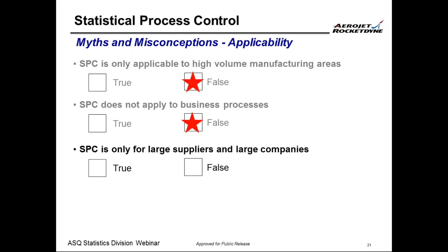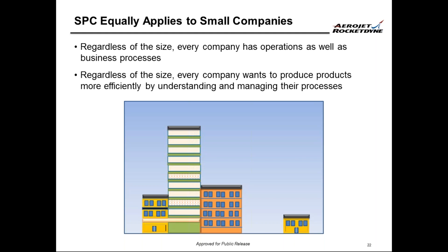SPC is only for large suppliers and large companies — this is also not true. When visiting suppliers, they would say they are a very small supplier and cannot apply SPC. But SPC applies regardless of the size of the company, because every company has operations as well as business processes. Regardless of size, every company wants to produce good parts and work efficiently by managing and understanding variation. Variation is variation and a process is a process — it doesn't matter whether it is a small company, large company, business process, or operations process.